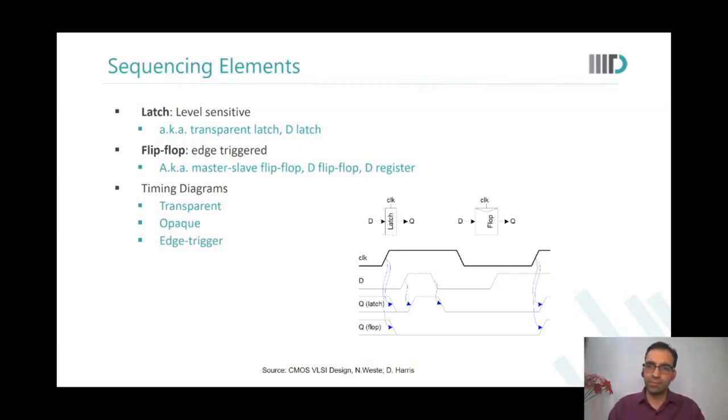Sir, in the timing diagram drawn below, when is this latch transparent and opaque? According to me, when the clock is zero and D is zero, then Q becomes zero, then here the latch must be opaque. And when the clock is one and Q is one, then it must be transparent. Because according to me, opaque is just reverse of transparent.